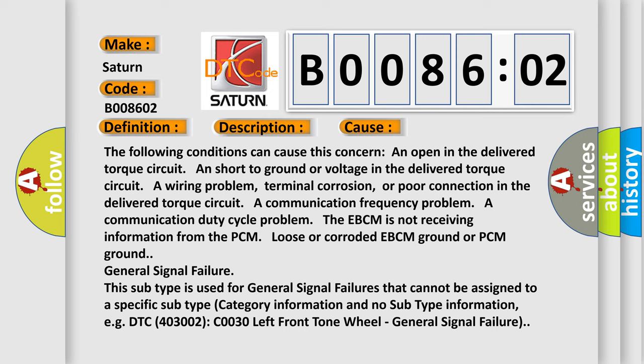An open in the delivered torque circuit and short to ground or voltage in the delivered torque circuit. A wiring problem, terminal corrosion, or poor connection in the delivered torque circuit. A communication frequency problem. A communication duty cycle problem. The EBCM is not receiving information from the PCM. Loose or corroded EBCM ground or PCM ground.